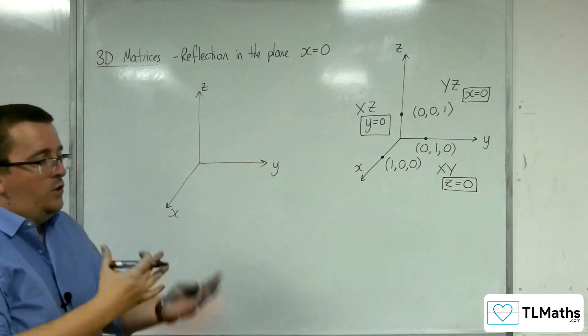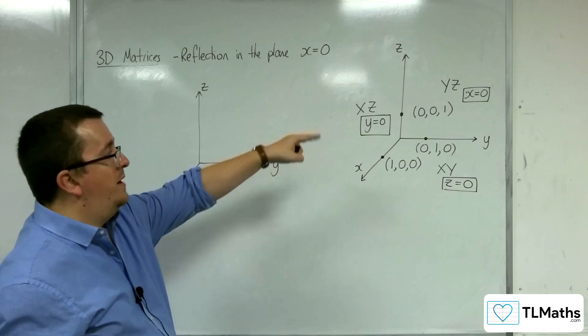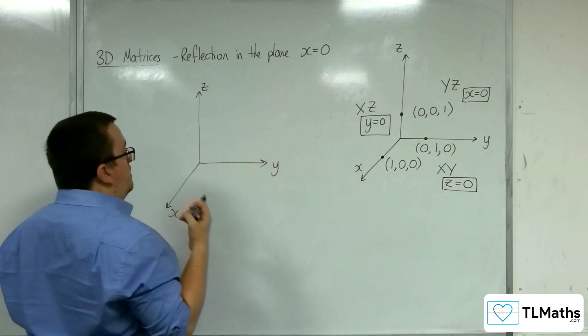And the way that we do this is we look at where those points (1,0,0), (0,1,0), and (0,0,1) have mapped to.